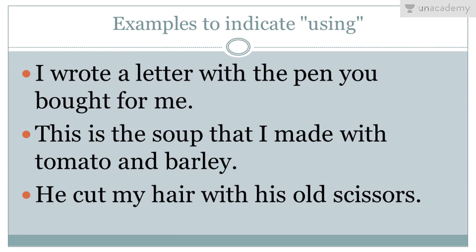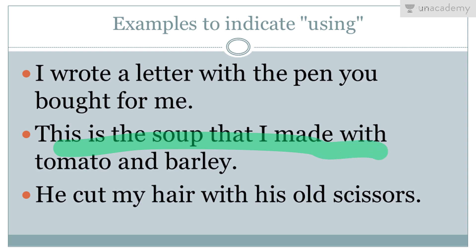Examples to indicate 'using' — how we use something in order to do something is also communicated using this preposition. First: 'I wrote a letter with the pen you bought me' — the letter was written using that pen. Next: 'This is the soup that I made with tomato and barley.' Third: 'He cut my hair with his old scissor' — using the old scissor in order to cut hair, giving the idea of using something to do something.